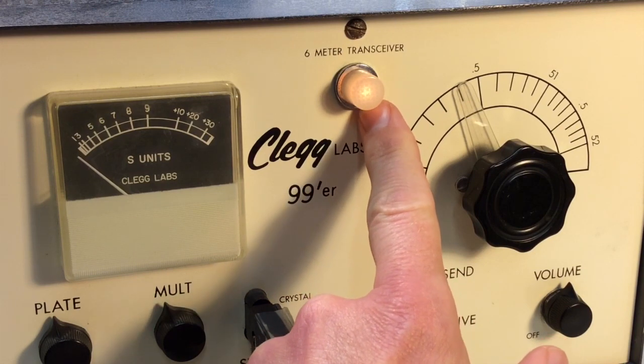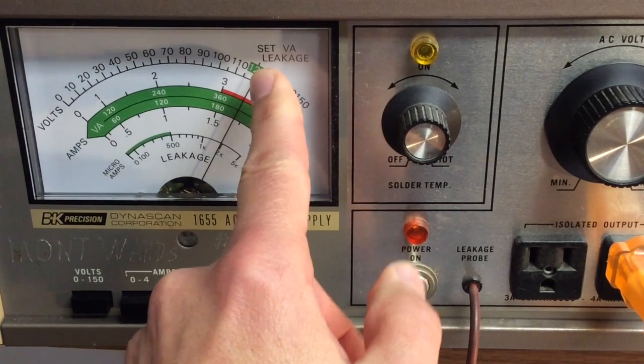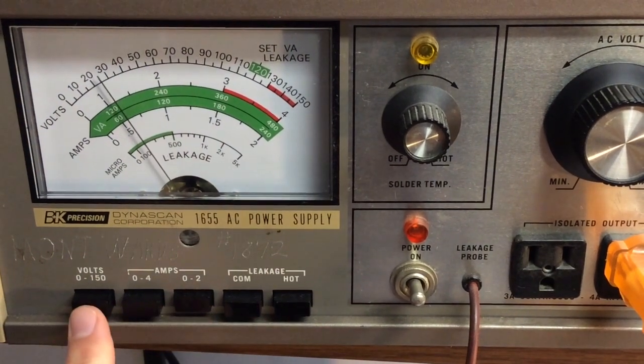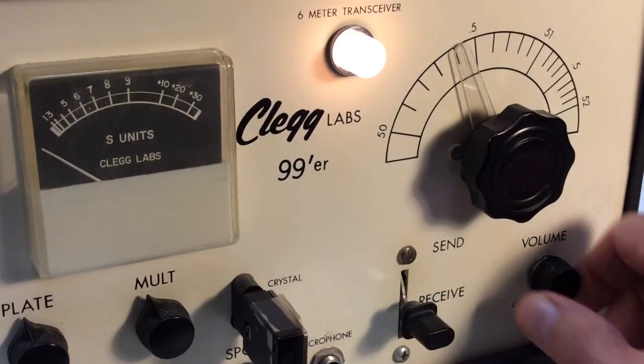As you can see, I'm bringing the voltage up slowly. The pilot lamp is beginning to light on the radio and we eventually reach the 120 volt level. And the current draw looks about what I would expect.